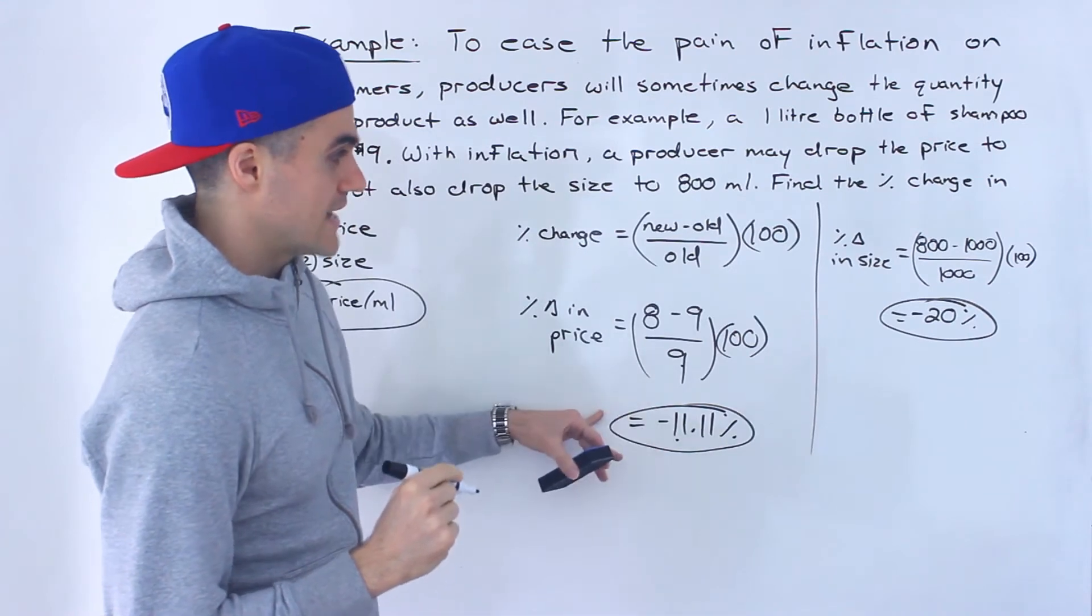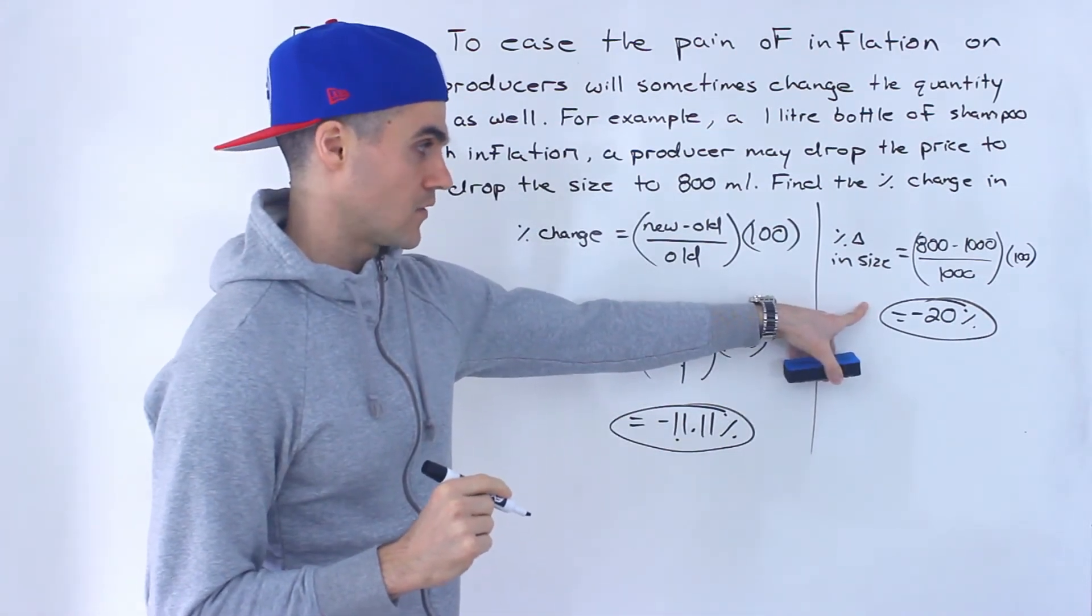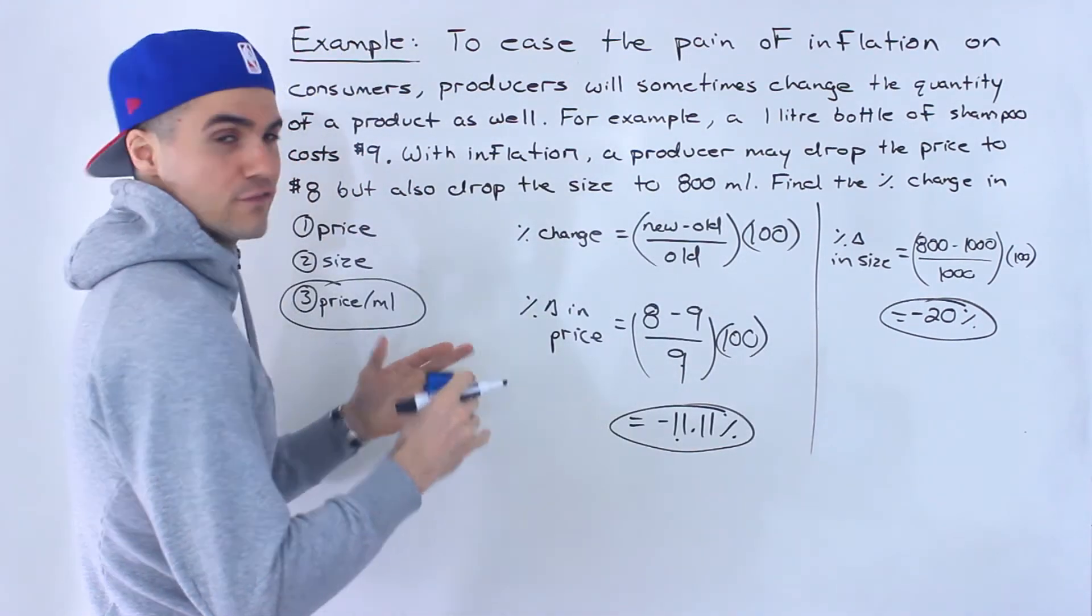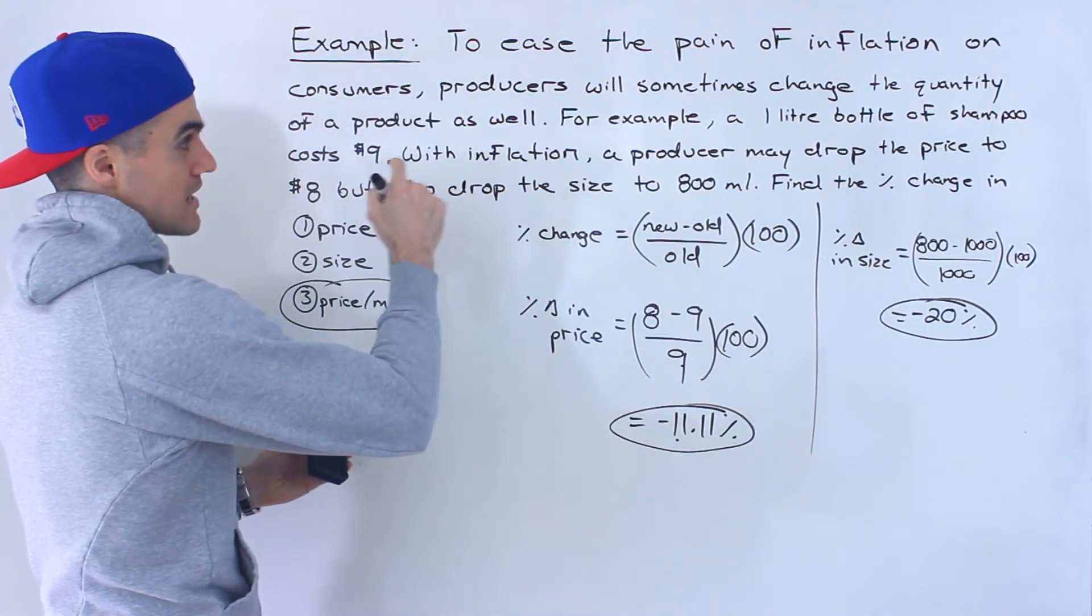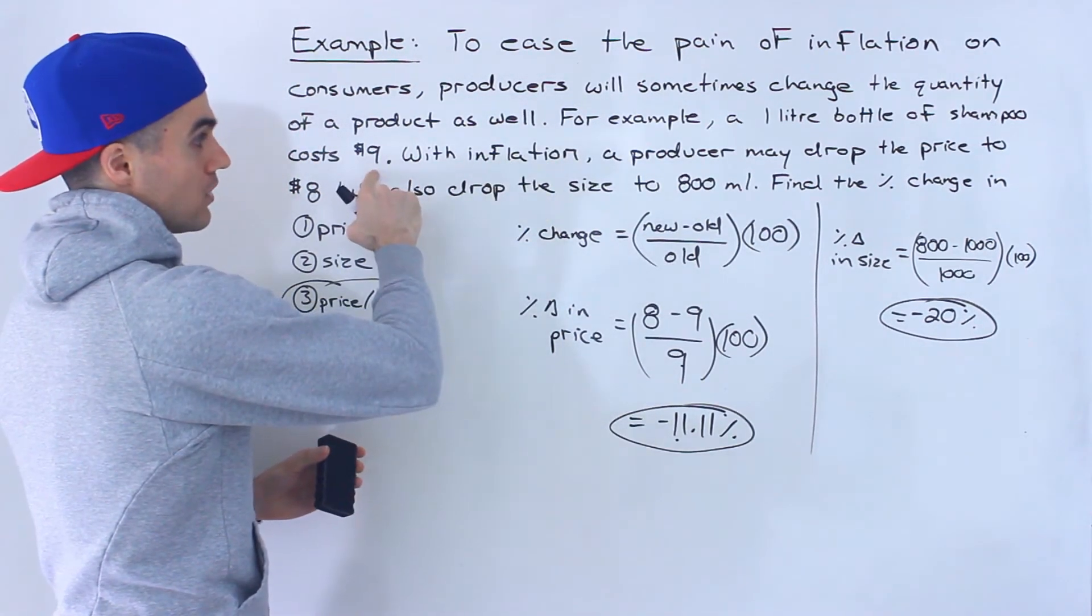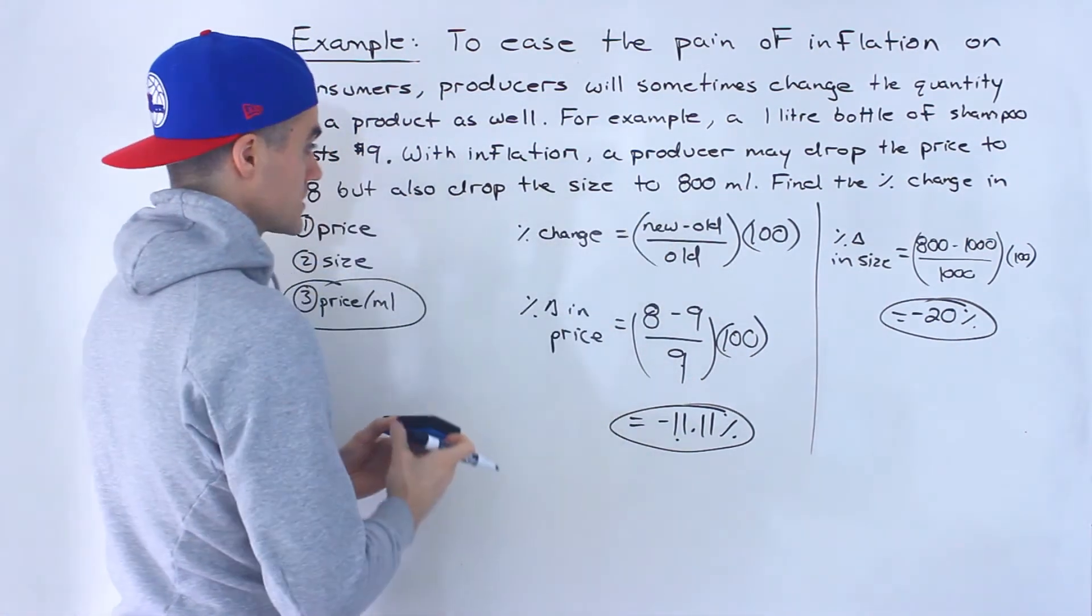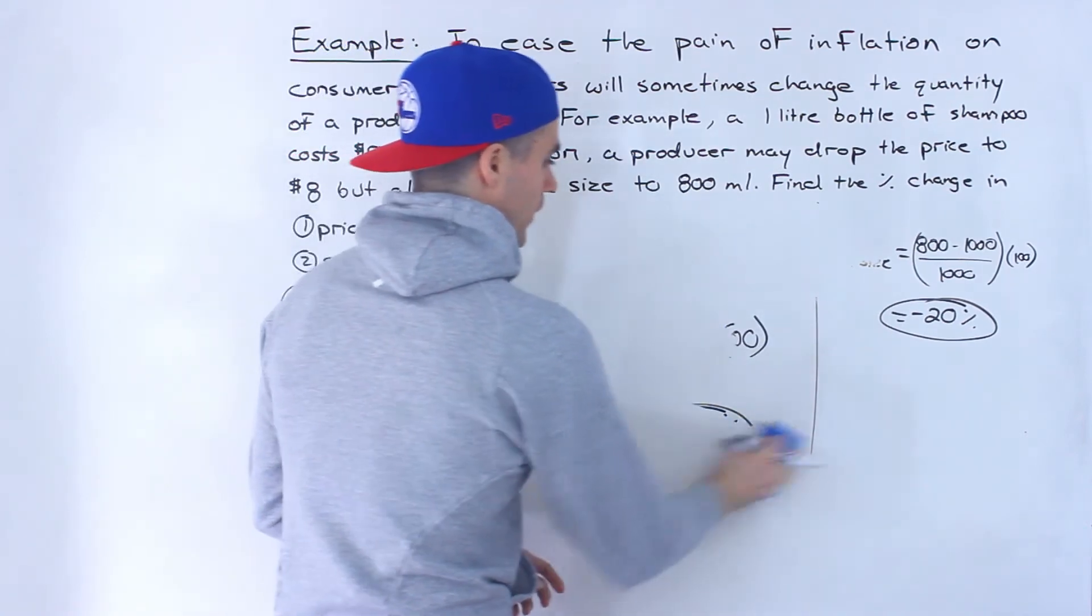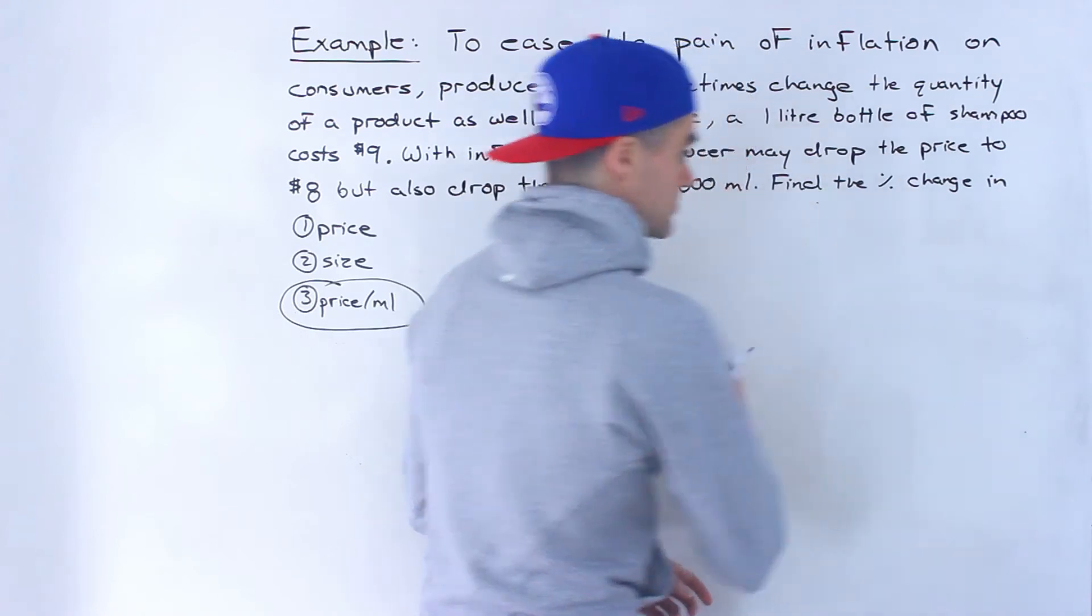So even though the price went down, they're dropping the size as well. So it kind of eases the effects of inflation. So instead of just upping the price of that same bottle from $9, they'll drop the price, but then they'll also drop the size.